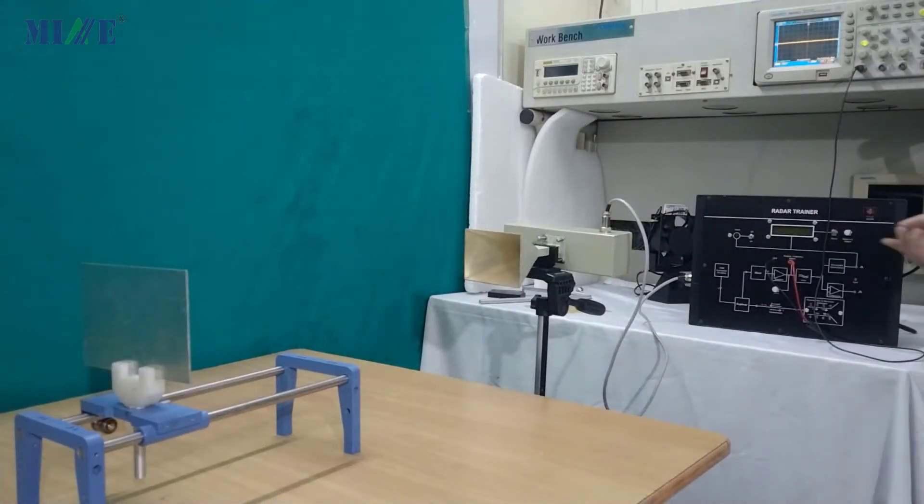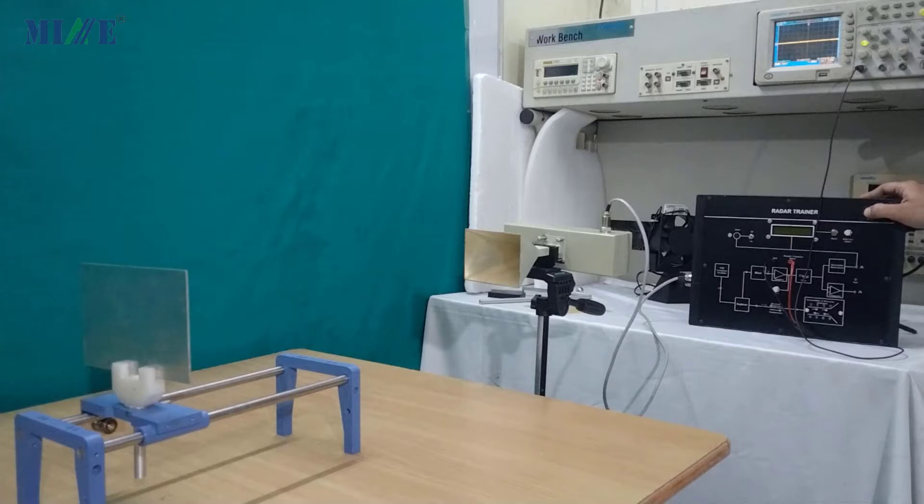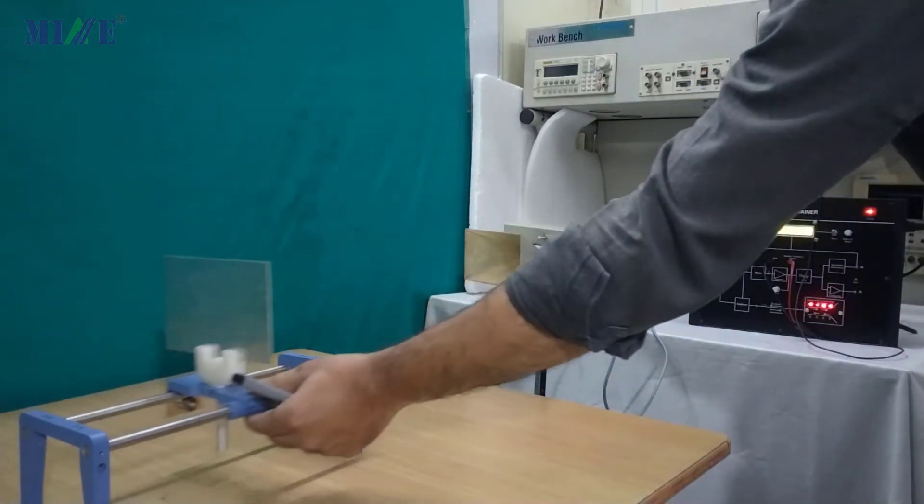Ensure that both knob detection adjust and level adjust are set for minimum. Now power on controlling unit. You will observe that there is a little reception in radar.